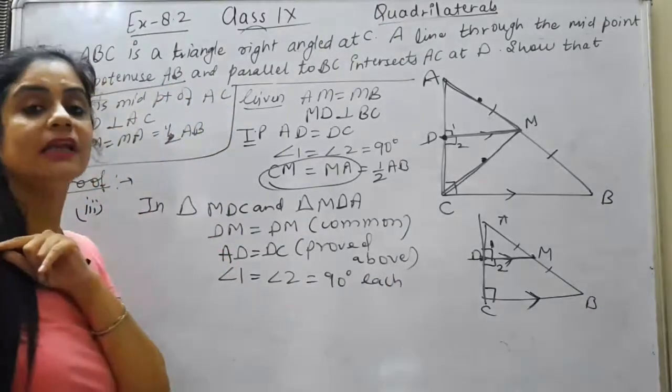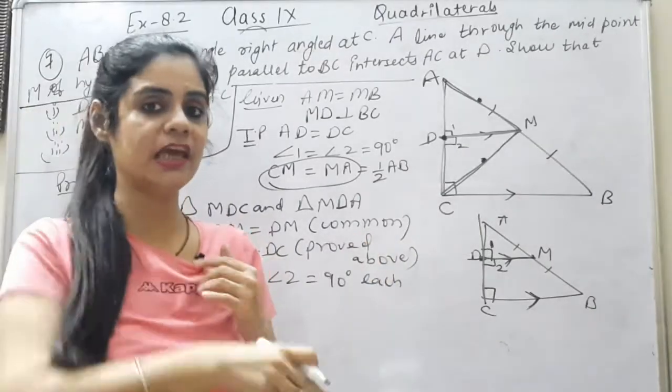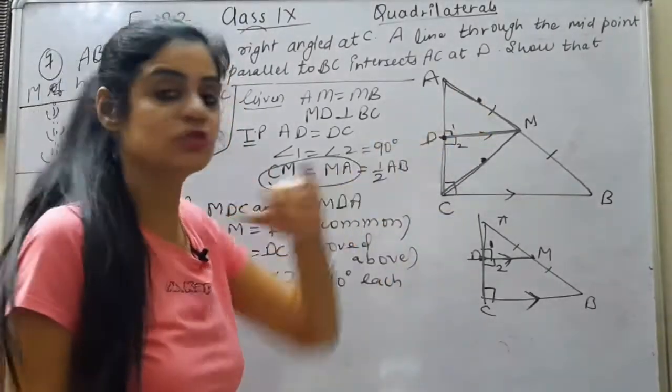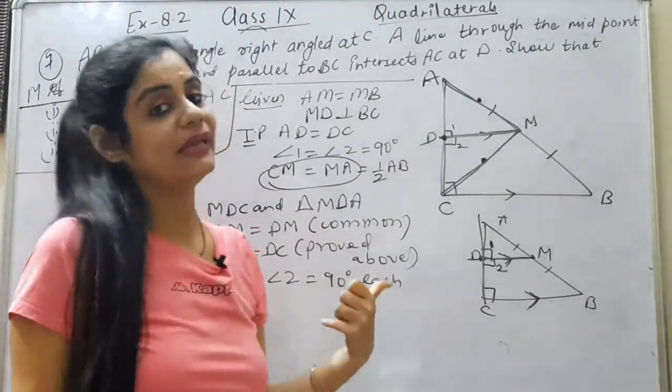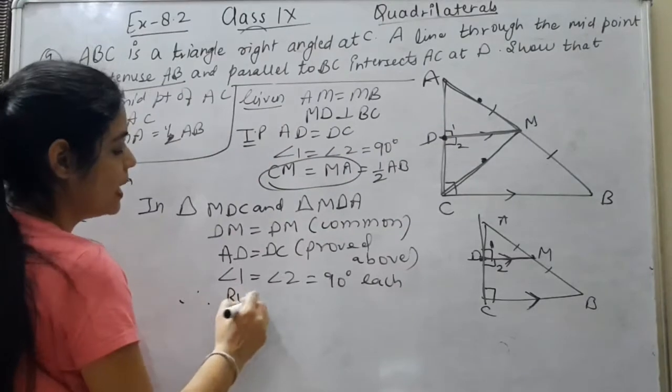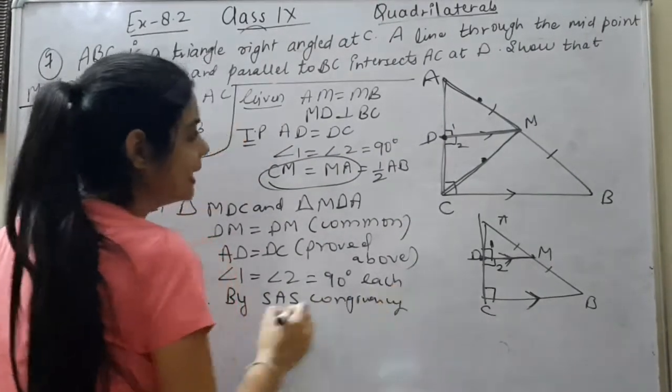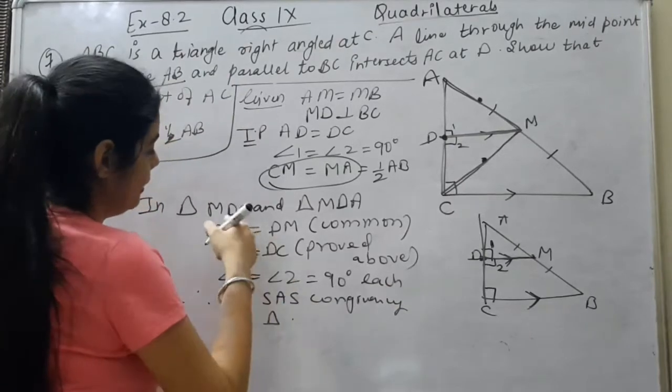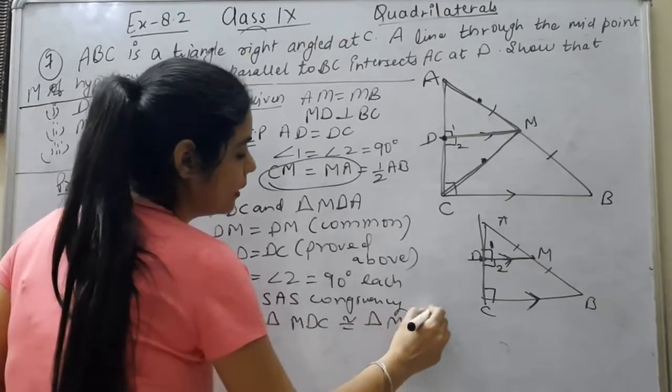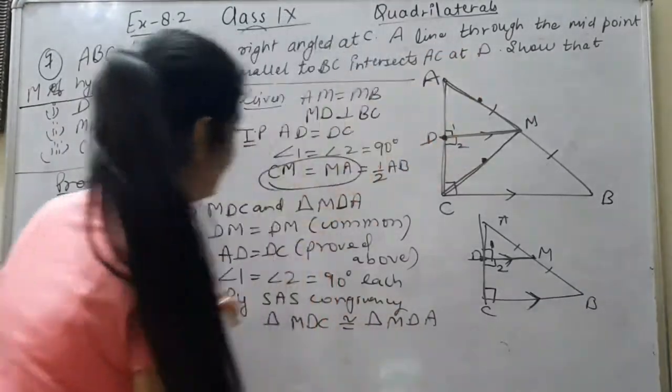Which congruency? RHS will not apply. Where is RHS? Because in RHS, H stands for hypotenuse and hypotenuse has not come here. So here will be SAS. Therefore by SAS congruency, triangle MDC is congruent to triangle MDA. And when it is congruent, CM equals AM by CPCT.